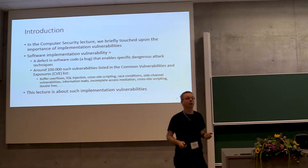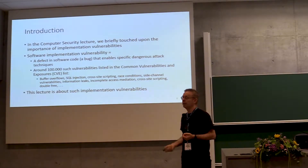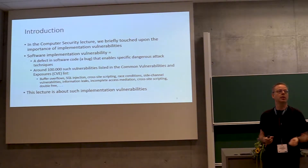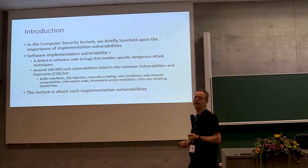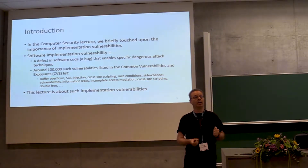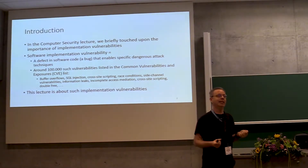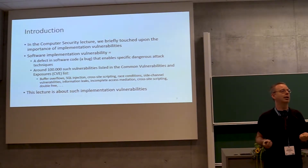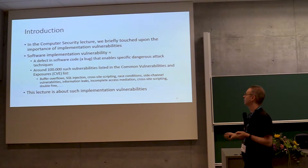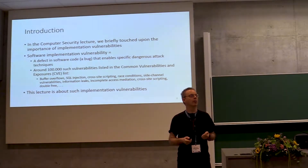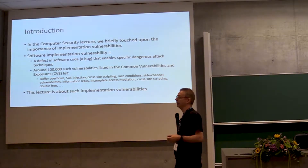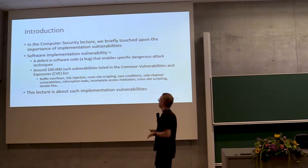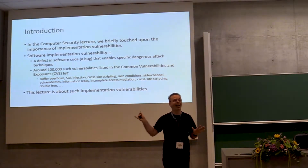There are plenty of them. Evidence for that is the CVE list. Common Vulnerabilities and Exposures is a list maintained by MITRE in the US — they give a unique identifier to any vulnerability found in widely used software. There are about a hundred thousand entries on that list right now, and they're of a very varied nature. You see terms here like buffer overflow, SQL injection, cross-site scripting — there are many many kinds of these bugs.